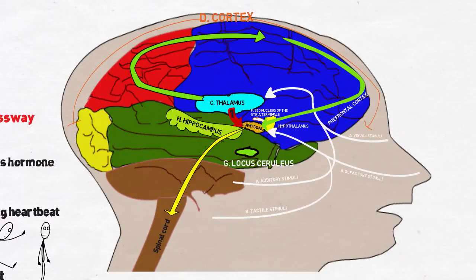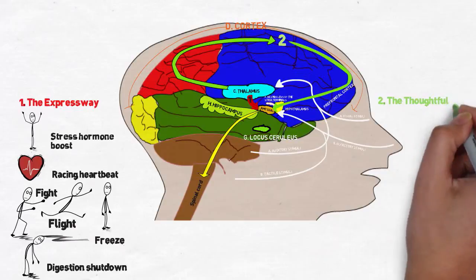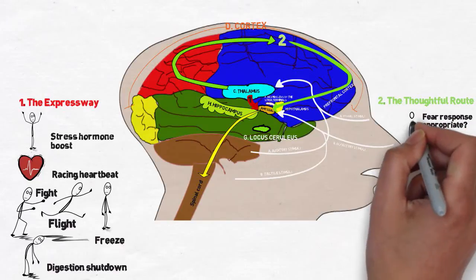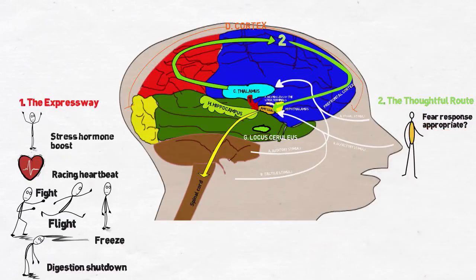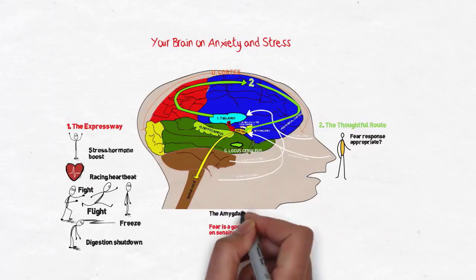Only after the fear response has been activated does the conscious mind kick in. Some sensory information takes a more thoughtful route, from the thalamus to the cortex. The cortex decides whether the sensory information warrants a fear response. If the fear is a genuine threat in space and time, the cortex signals the amygdala to continue being on alert.